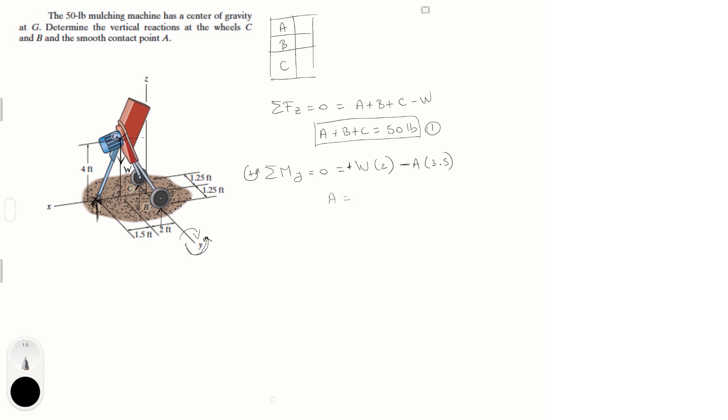So, A is equal to the weight times 2 over 3.5, but we know the weight was given in the problem at 50 pounds, so A is equal to 50 times 2 divided by 3.5 which comes out to be 28.57 pounds. So let's go for B and C.